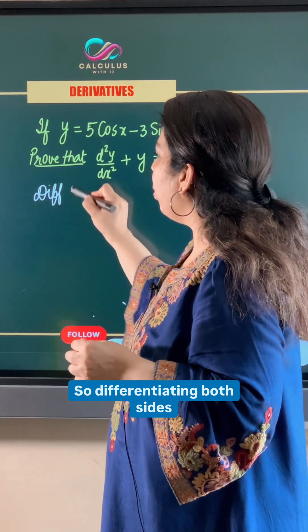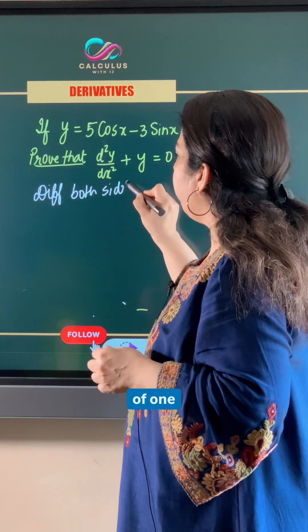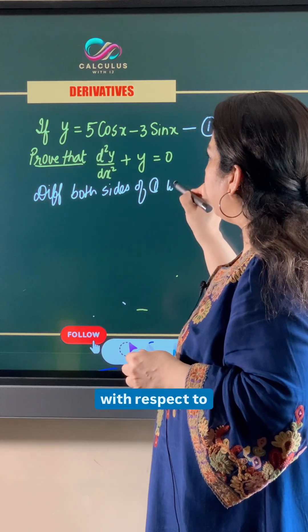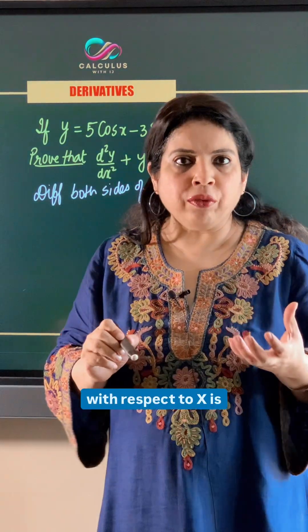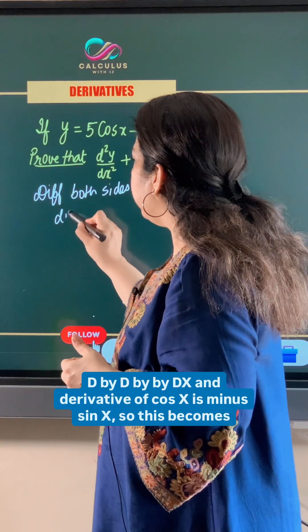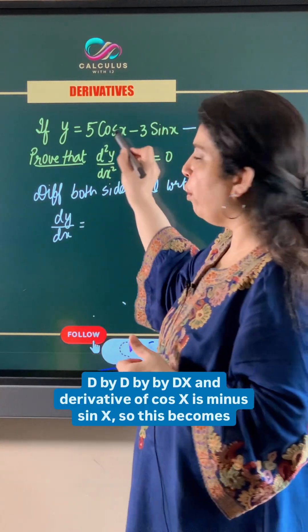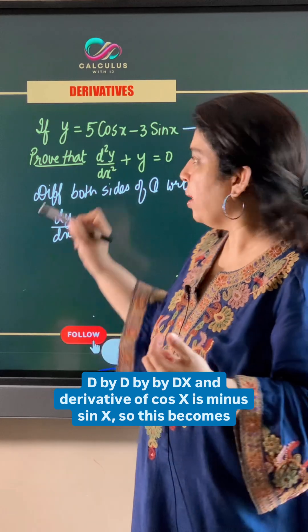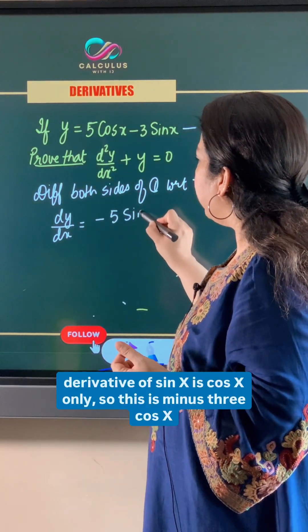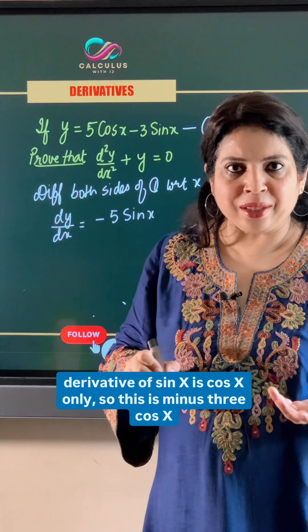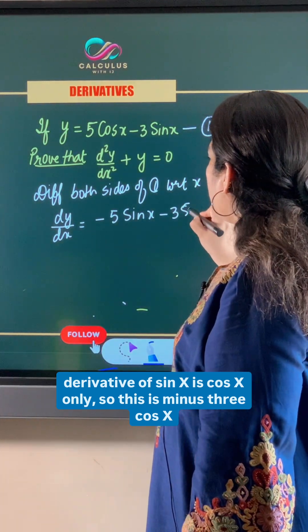Differentiating both sides of equation 1 with respect to x: the derivative of y with respect to x is dy by dx. The derivative of cos x is minus sin x, so this becomes minus 5 sin x. The derivative of sin x is cos x, so this term becomes minus 3 cos x.